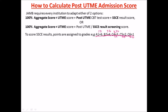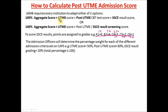The weight of your JAMB, Post-UTME, and WAEC scores as set on JAMB CAPS is: your UTME score is 50%, Post-UTME score is 30%, and your WAEC score is 20%, giving a total of 100%. If your school doesn't do Post-UTME, then your JAMB score will be 50% and your WAEC score will be 50%. So if you score low in WAEC it will heavily affect your aggregate.